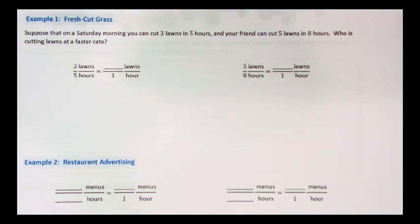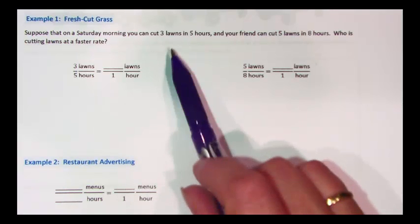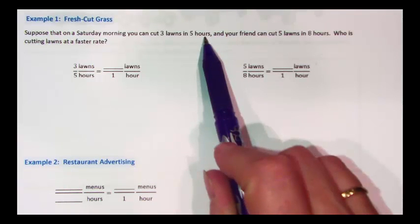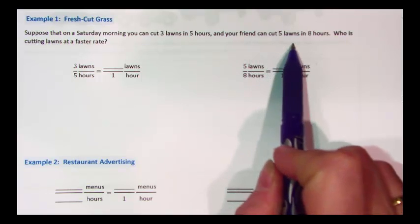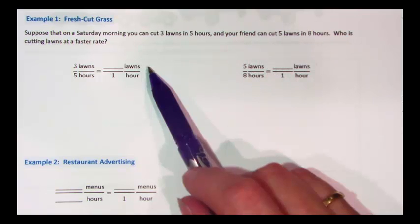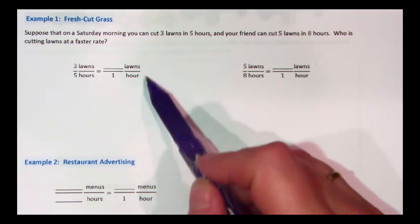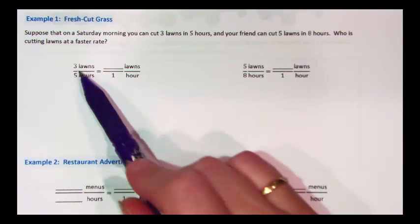Let's suppose on Saturday morning, you can cut three lawns in five hours, and your friend can cut five lawns in eight hours. We're comparing who is cutting lawns at a faster rate. We're comparing lawns per hour.